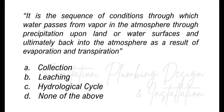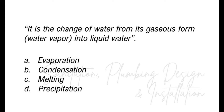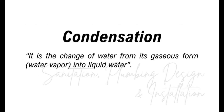It is the sequence of conditions through which water passes from vapor in the atmosphere through precipitation upon land or water surfaces and ultimately back into the atmosphere as a result of evaporation and transpiration — A, collection; B, leaching; C, hydrological cycle; D, none of the above? The answer is hydrological cycle. It is the change of water from its gaseous form or water vapor into liquid water — A, evaporation; B, condensation; C, melting; D, precipitation? The answer is condensation.